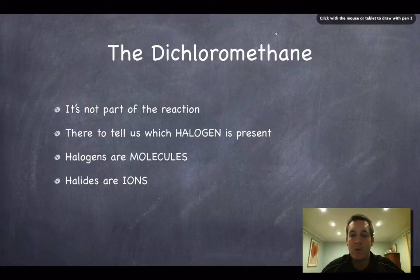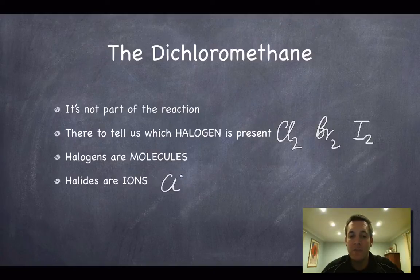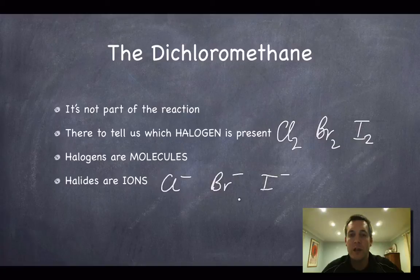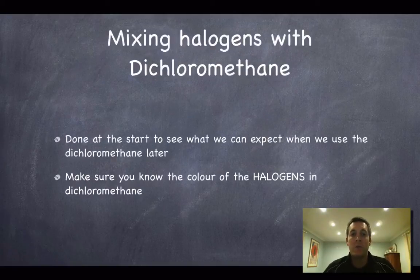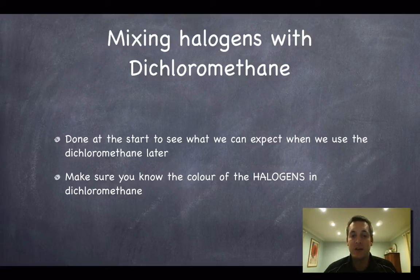The dichloromethane is just there to tell us which halogen is present. Remember that by halogen we mean the elements — so that's Cl₂, Br₂, and I₂ — as opposed to the halides, which are ions: Cl⁻, Br⁻, and I⁻. The halide ions are always colourless, whereas the halogen molecules are coloured. The point of mixing the halogens with dichloromethane at the start is so we can see what colour they'll be in dichloromethane, since we'll add dichloromethane to every experiment to decide which halogen is actually present at the end of the reaction.